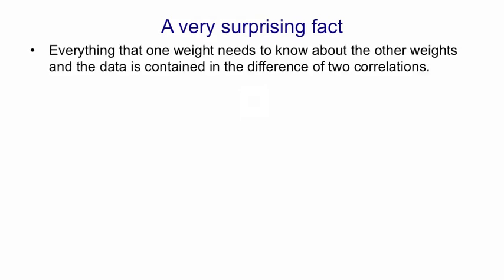Given that one weight needs to know about other weights in order to be able to change even in the right direction, it's very surprising that there's a very simple learning algorithm, and that the learning algorithm only requires local information. It turns out that everything that one weight needs to know about all the other weights and about the data is contained in the difference of two correlations.